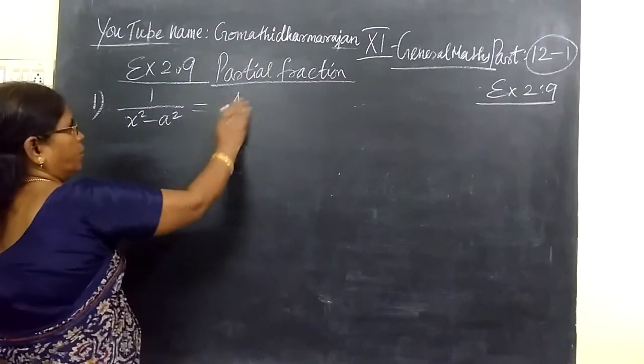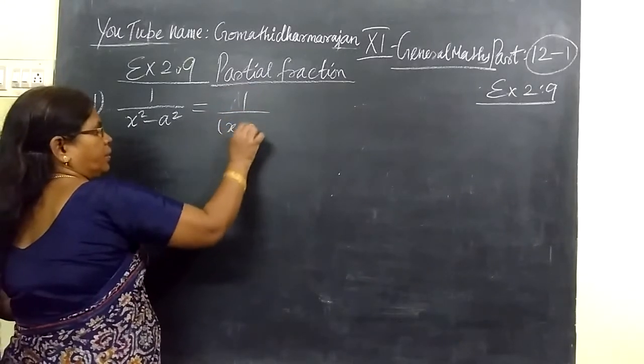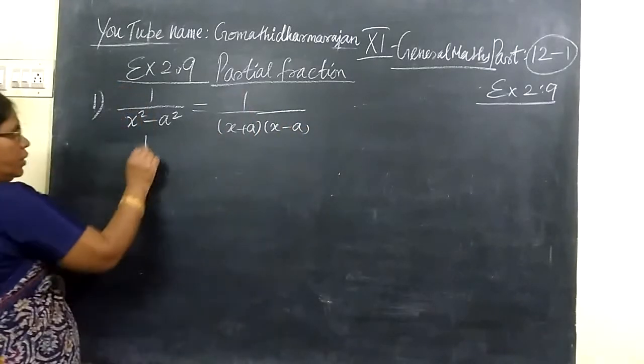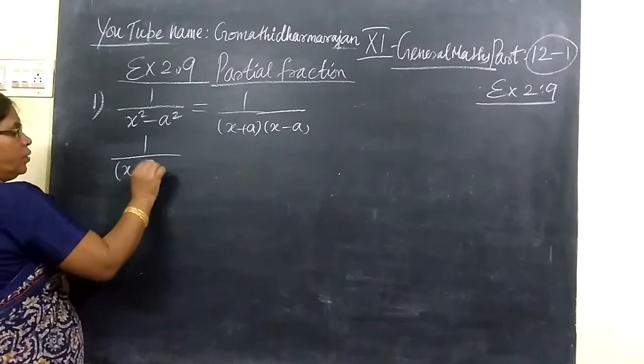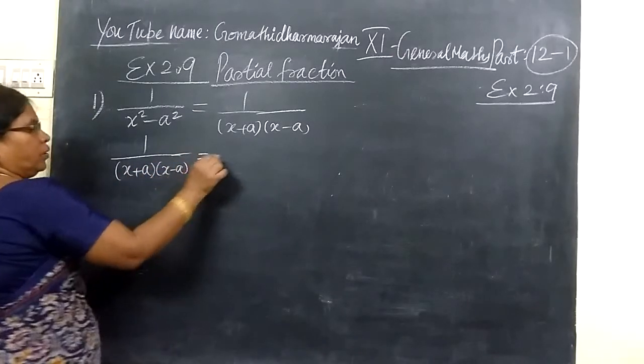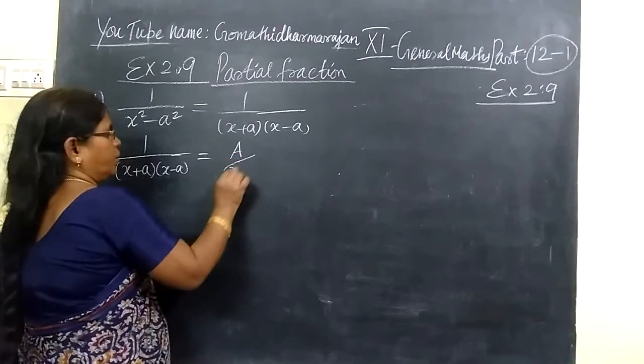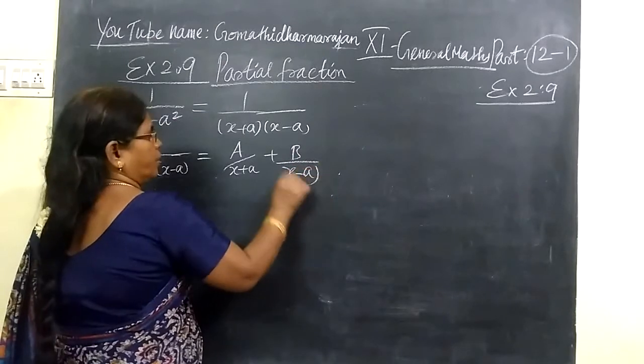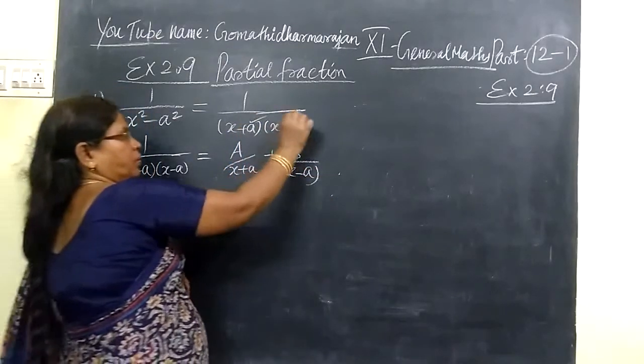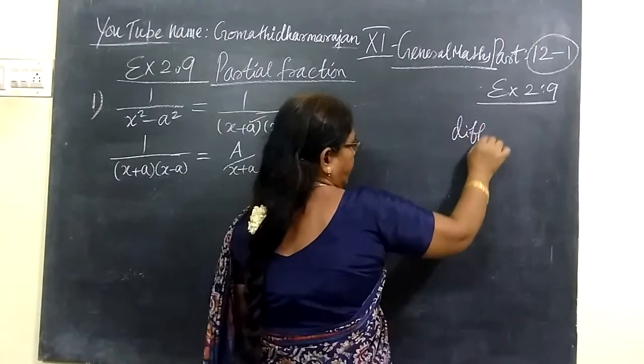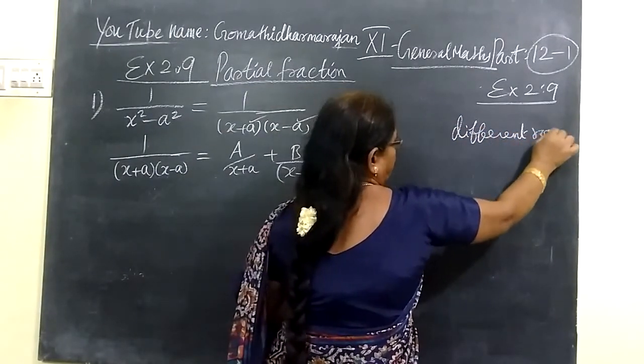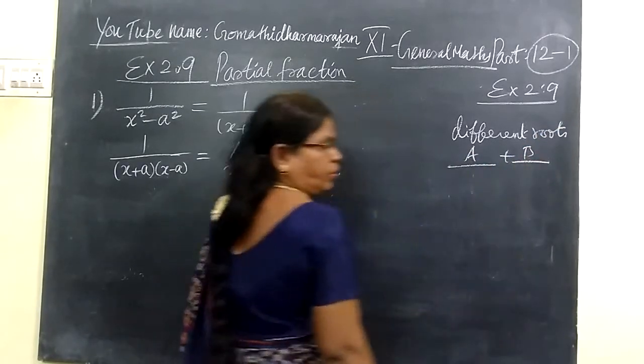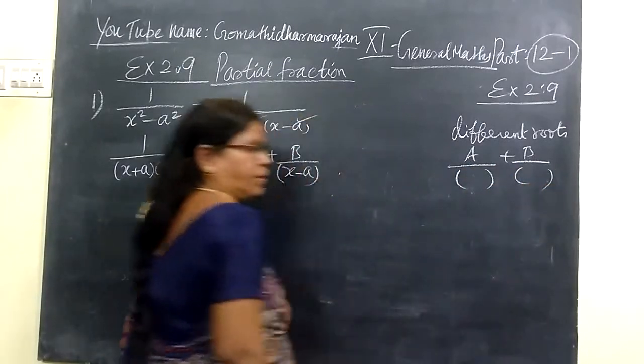This can be written as 1 by (x plus a) into (x minus a). So I can split into: this can be written as A by (x plus a) plus B by (x minus a). Here different roots were this. So different roots, A by first factor, then B by second factor.